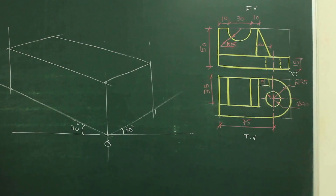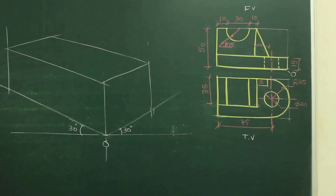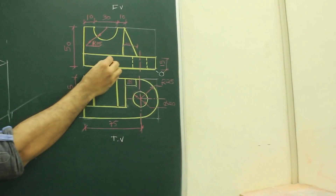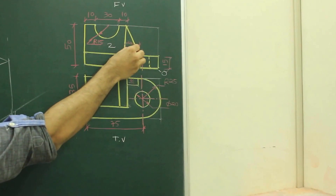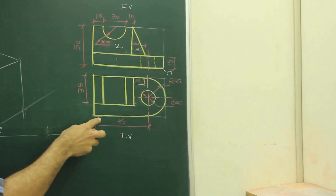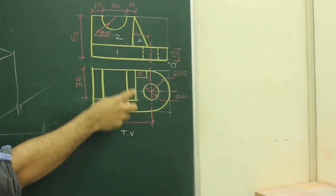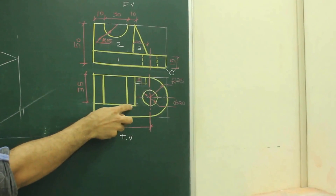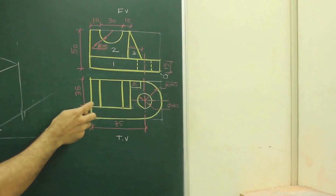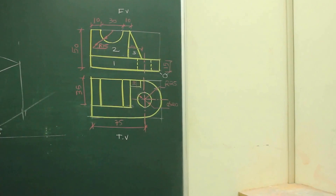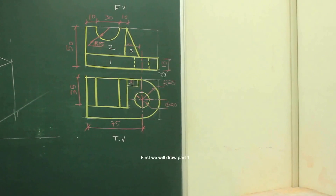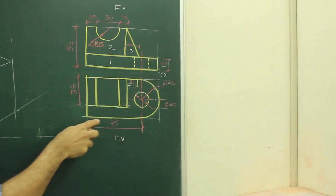Now after this, in front of you there are three parts — part 1, part 2, part 3. Part 1 is this lower part, part 2 is this, and part 3 is this. So which one should I draw first — part 1, part 2, or part 3? Part 1, right? Because that is nearer to the observer.